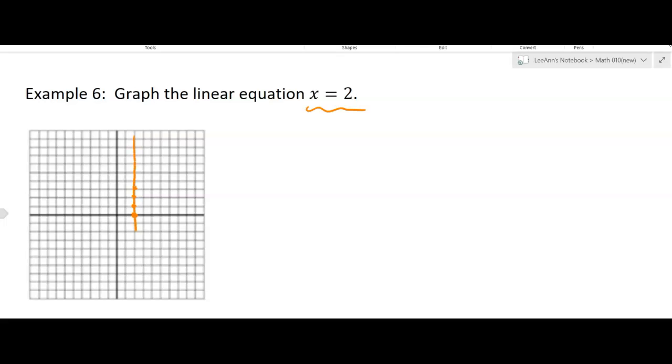Or you can just remember when it's x, like the x games, you know, skiing off the cliff. Anyway, I don't know if that helps, but it's a vertical line. It's not a function, but that's how you graph it, x equals 2.